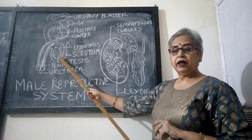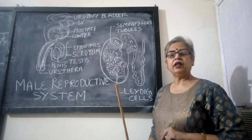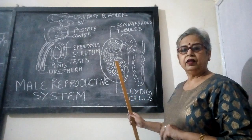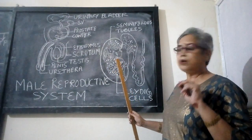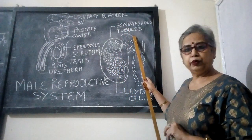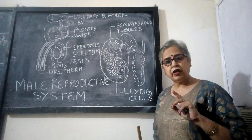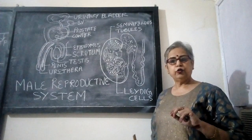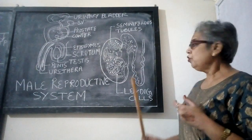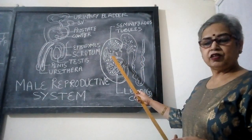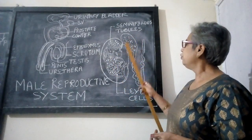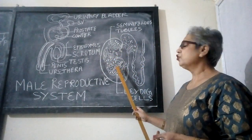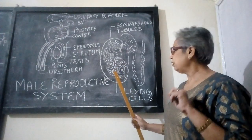Now, why are testes the primary sex organs? This is because in each testis there are a large number of seminiferous tubules. The main function of gonads or sex organs is to produce gametes, so the male gametes — the sperms — are produced in these seminiferous tubules. Spermatogenesis takes place here, which is why the testes are the primary sex organs.